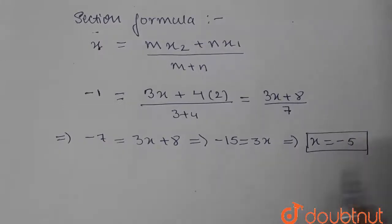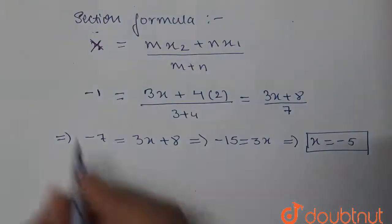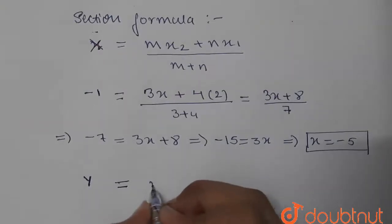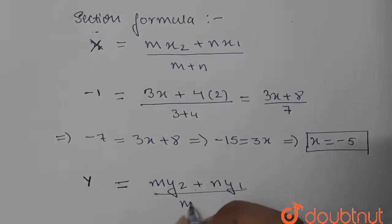For y, the y-coordinate of point B, it is found by y = (m·y₂ + n·y₁)/(m + n).